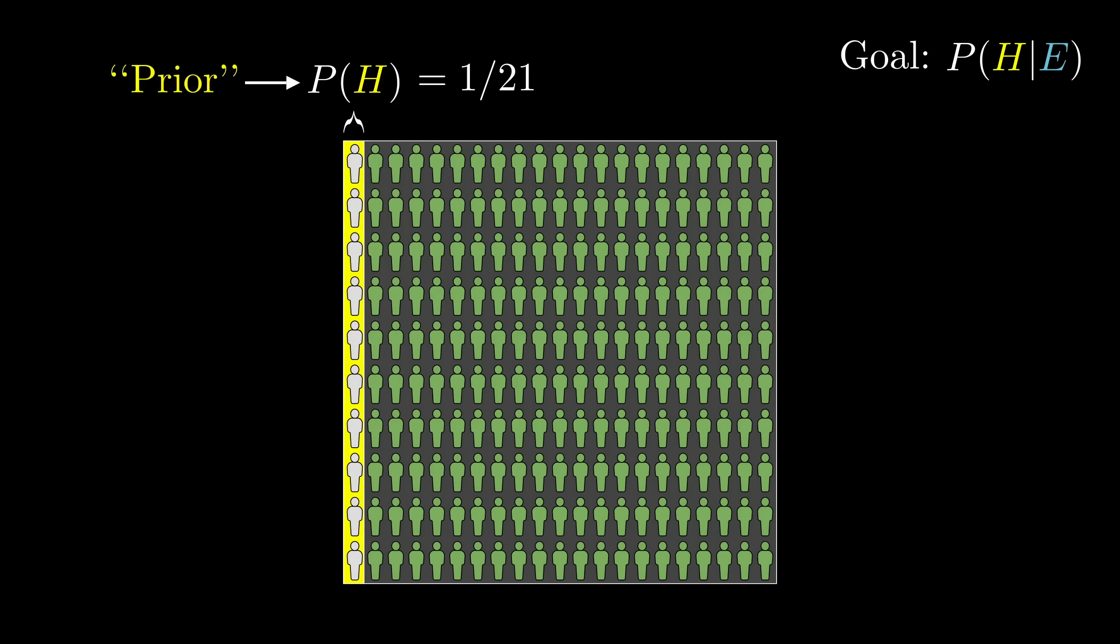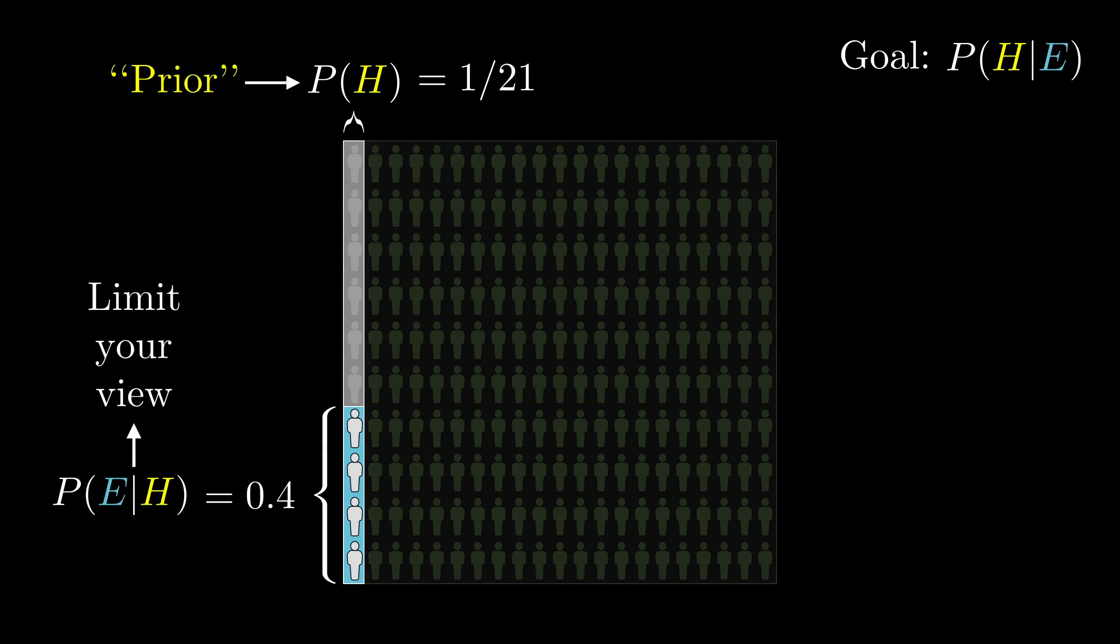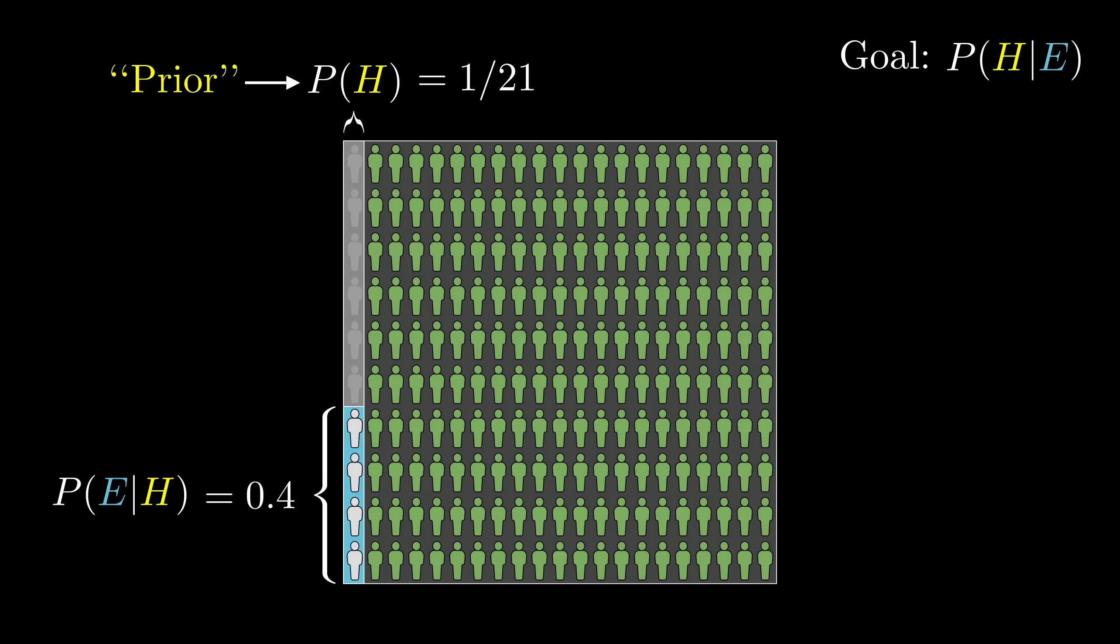After that, we need to consider the proportion of librarians that fit this description, the probability that we would see the evidence given that the hypothesis is true. Again, when you see this vertical bar, it means we're talking about some proportion of a limited part of the total space of possibilities. In this case, that limited part is the left side where the hypothesis holds. In the context of Bayes' theorem, this value also has a special name. It's called the likelihood.